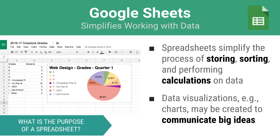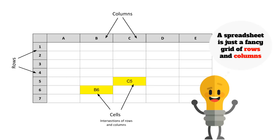It's hard to glance at a grid of data and make sense of it, so we often turn that data into charts because, after all, a picture tells a thousand words. A spreadsheet is just a fancy grid of rows and columns. Where rows and columns intersect, you have what are called cells.